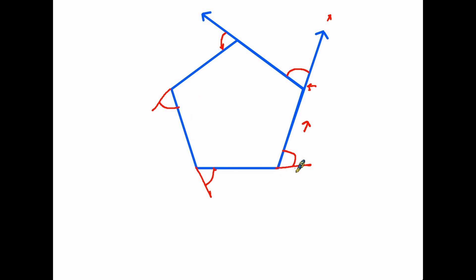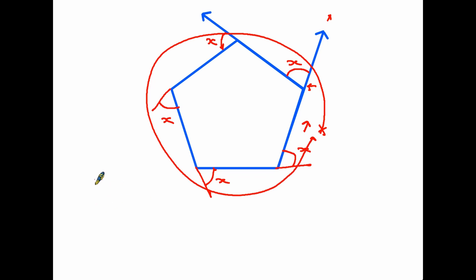Because this is a regular polygon, each corner is the same size. If we call that angle x, each exterior angle is x. If you consider what we've done — we started and effectively gone around in a full circle — in total we have turned 360 degrees, and we have done that by making five equal turns.